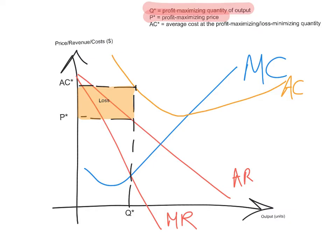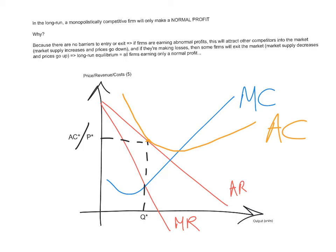There are two possible scenarios in the short run: either the monopolistically competitive firm will be earning an abnormal profit or will be making a loss. Actually, there's a third possible scenario, which is that the firm is only earning a normal profit. In that case, at the intersection of marginal cost and marginal revenue you get Q*, and going up it just so happens that average cost at the profit maximizing quantity equals the price. In the long run, a monopolistically competitive firm will only make a normal profit. So in the short run it can make a normal profit, abnormal profit, or a loss, but in the long run it can only earn a normal profit.